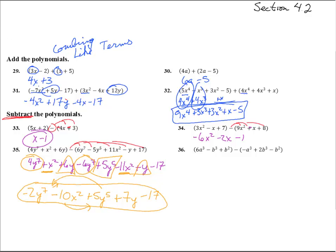And number 36. Let's take this minus and distribute it here, here, and there. That'll make that a plus, make that a minus, and make that a plus. 6a cubed plus a cubed — that's 7a cubed. Minus b cubed minus 2b cubed — that's minus 3b cubed. And plus b squared plus b squared — that's plus 2b squared.